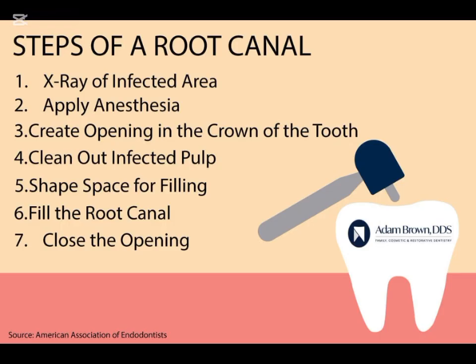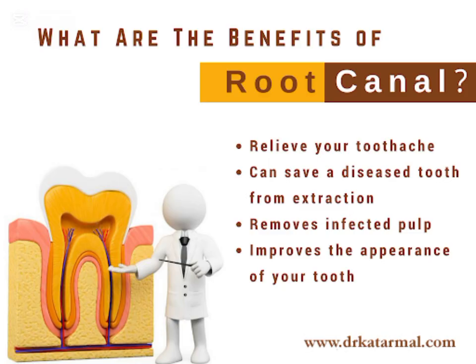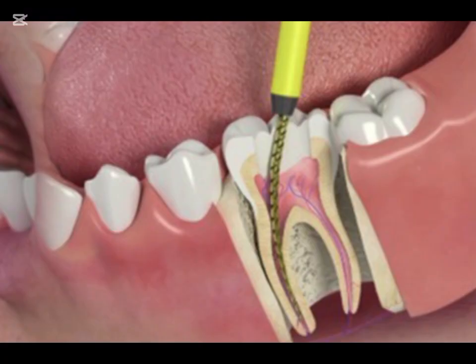Here is the step-by-step root canal procedure. Step 1: X-ray to check the root and surrounding bone. Step 2: Local anesthesia — it's pain-free. Step 3: Dental dam placement to isolate the tooth. Step 4: Pulp removal and canal cleaning. Step 5: Canal shaping and disinfection. Step 6: Sealing the tooth. Step 7: Post-RCT crown placement for full function.